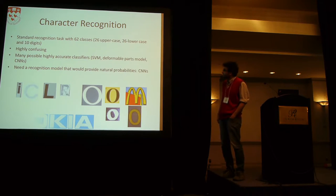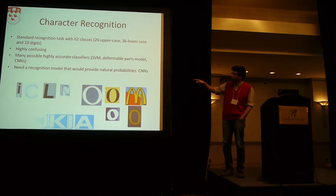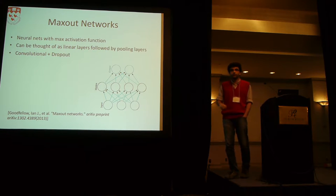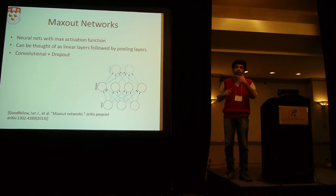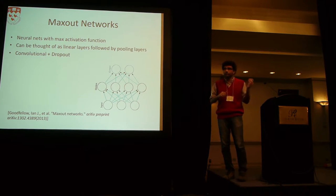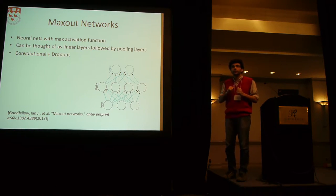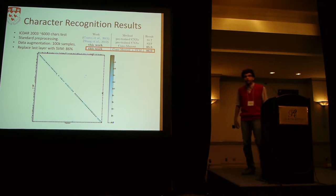There are several classifiers to choose from: SPMs, deformable parts models, and ConvNets. We wanted something that provides natural probabilities — not like an SPM where you fit a logistic on top to get probabilities — because we're going to plug this into another model. For our particular ConvNet, we use maxout for pragmatic reasons. Maxout is an activation function from an ICML 2013 paper by Ian and others at University of Montreal, and can be thought of as linear layers followed by pooling layers. Our variant uses convolutions and dropout.